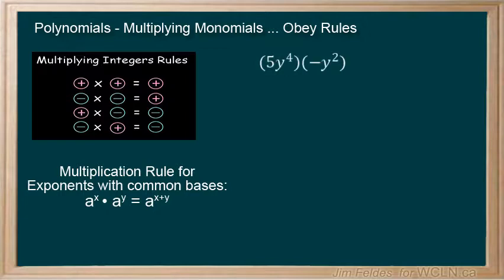Here are two monomials being multiplied. The coefficients have a single negative sign, giving us negative 5. And the 4 plus 2 leaves us with y to the sixth.